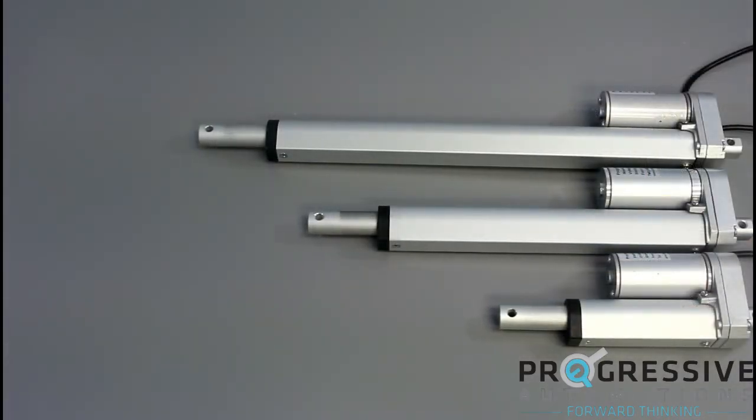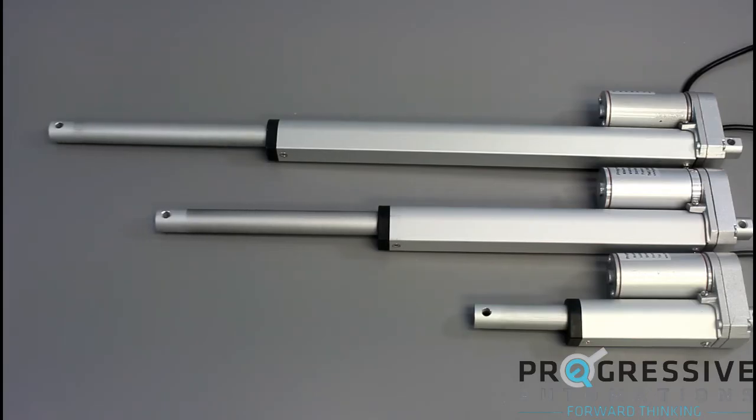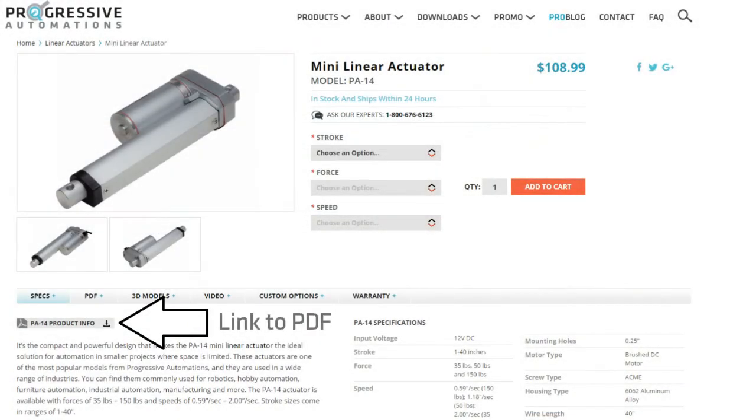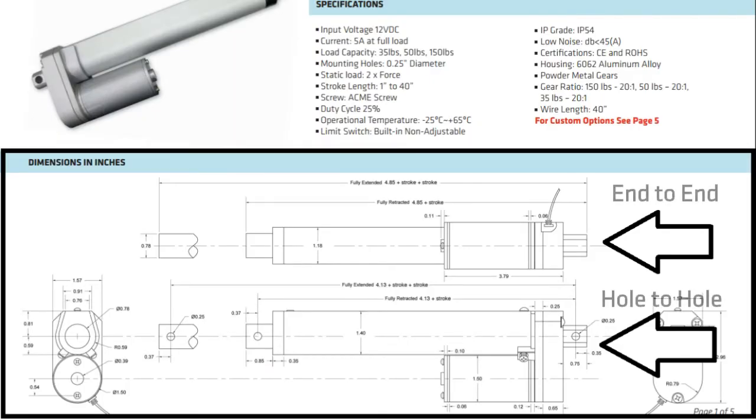For further information on the dimensions and stroke lengths of an actuator please visit our website. Dimensional drawings are located within the product PDF. Located within the product PDF document are two dimensional drawings: mounting hole to mounting hole and end to end.